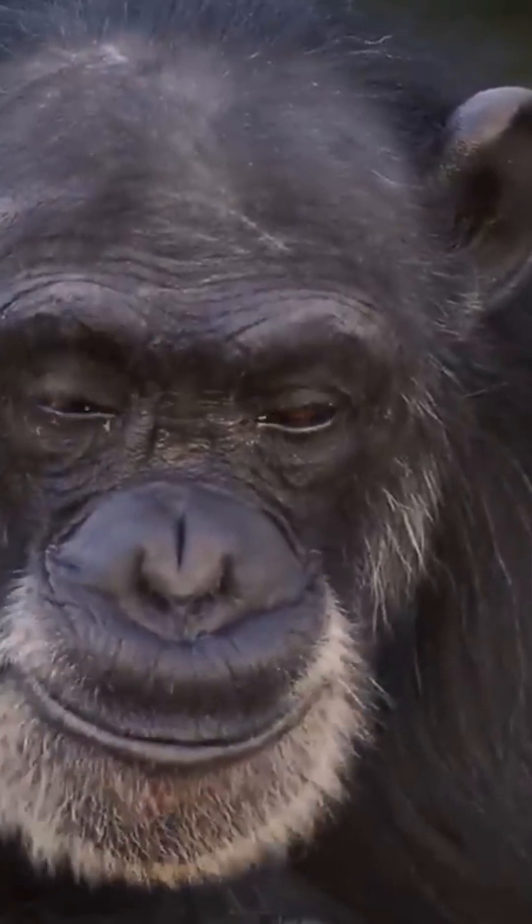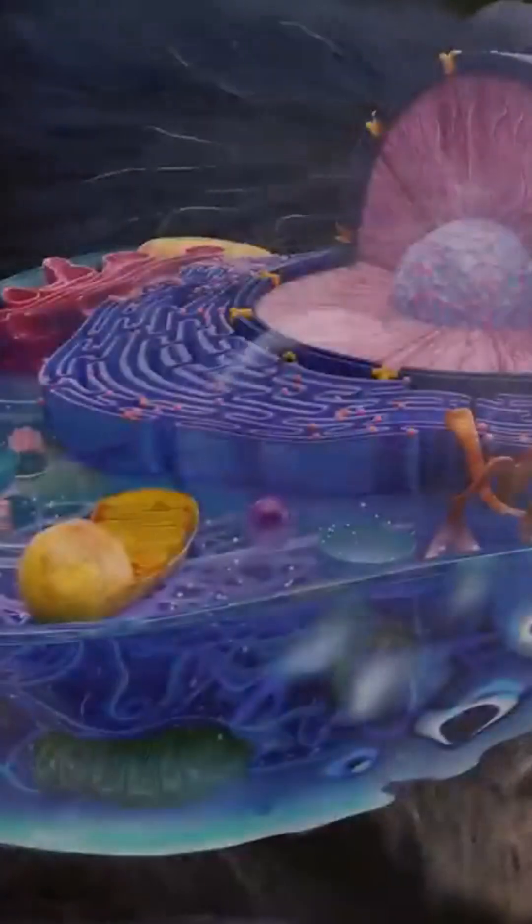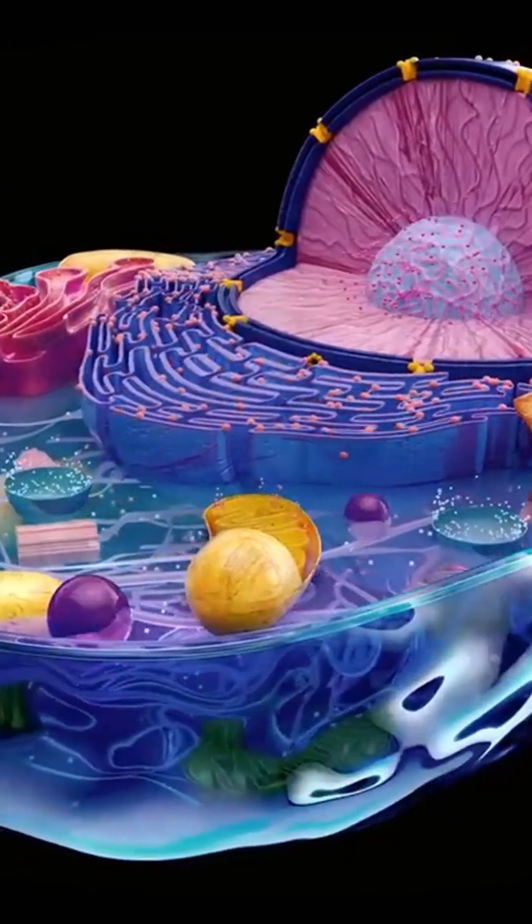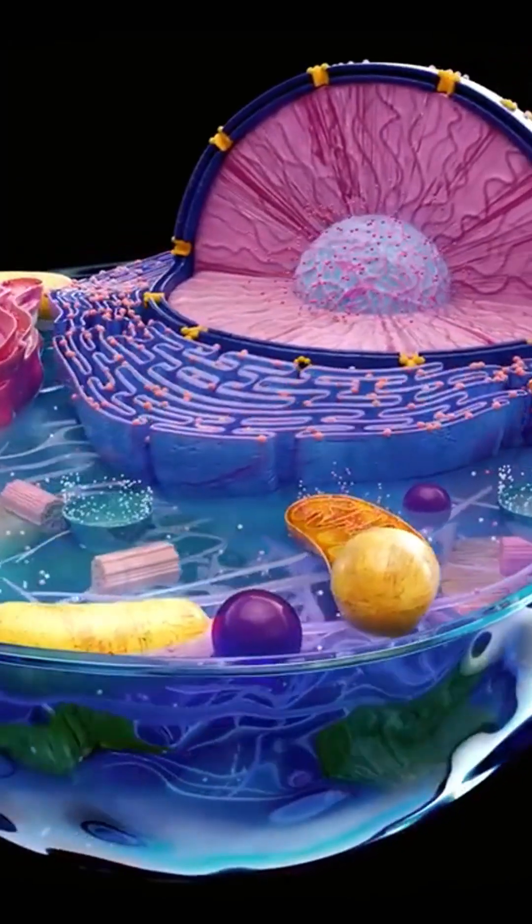The second group of organisms to develop is the metazoans. They are multicellular, consisting of a nucleus and organelle.